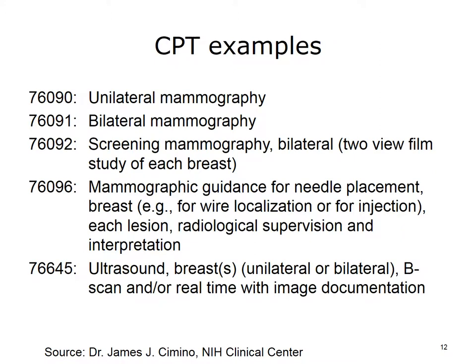Here are some examples of CPT codes: 76-090 Unilateral mammography; 76-091 Bilateral mammography; 76-092 Screening mammography, bilateral, two-view film study of each breast; 76-096 Mammographic guidance for needle placement, breast (e.g., for wire localization or for injection), each lesion, radiological supervision and interpretation; 76-645 Ultrasound, breasts, unilateral or bilateral, B-scan and/or real-time with image documentation. Note how specific some of the codes are. These codes have much significance related to billing. The reimbursement may differ greatly depending on the code used.